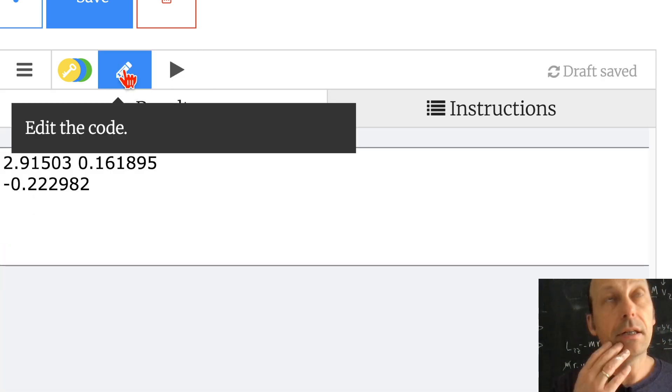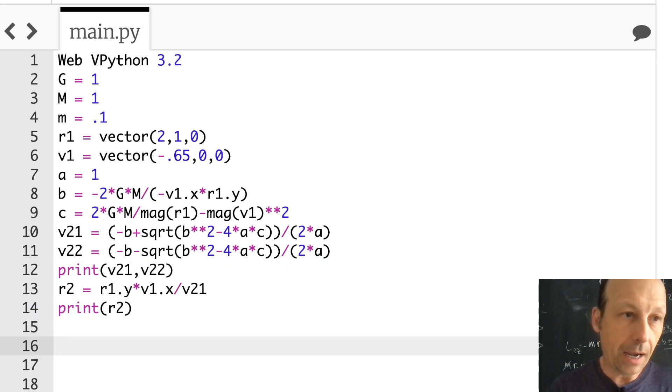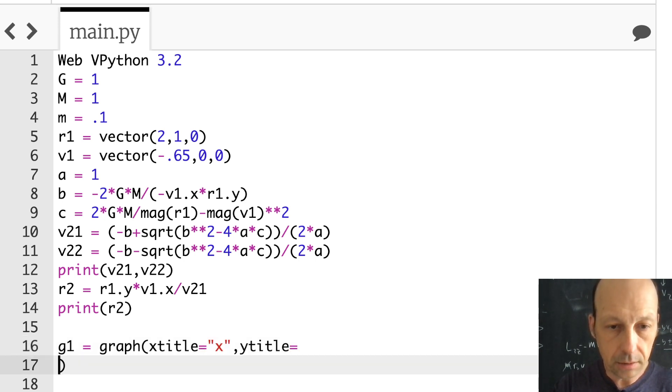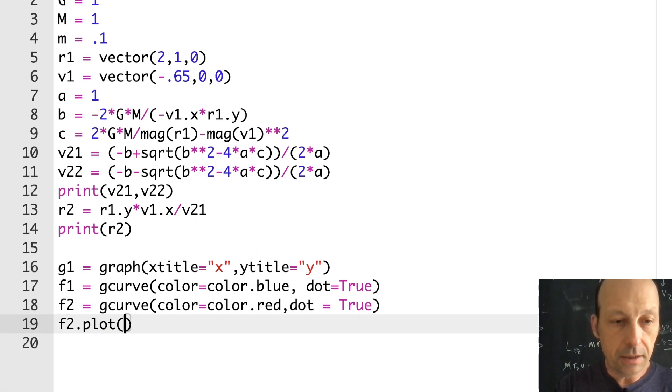Okay. So, now, let's just... Why is that negative? Oh, because again, I had that negative sign in it. That's fine. Now, let's just go ahead and model this numerically. And I've done this before. Let's make a graph. X title equals X. Y title equals Y. And then, I'm going to make two points. F1 is G curve. Color equals color.blue. Dot equals true. They'll leave a dot. And then, my other one. You don't need it. F2 is G curve. Color is color.red dot equals true. So, I'm going to use this second graph to make my sun. Right? So, F2.plot zero zero. This is going to make a sun.